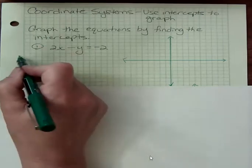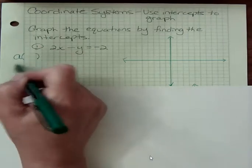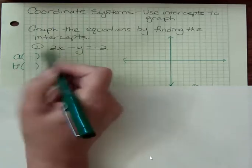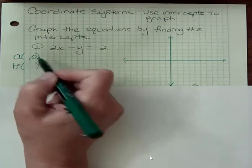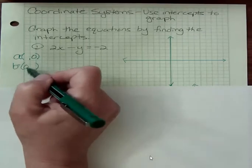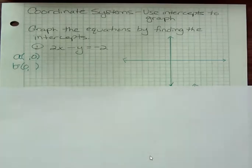I find two intercepts, the a-intercept and the b-intercept, or the x-intercept and the y-intercept. I find them by setting the various parts equal to zero.